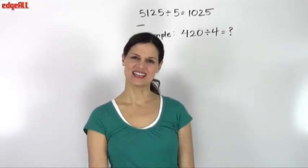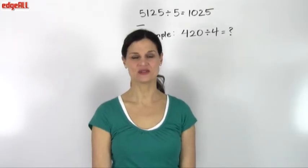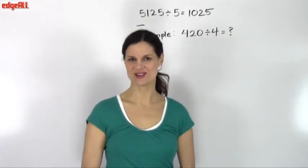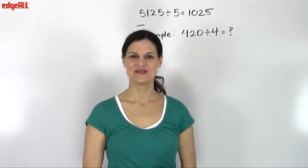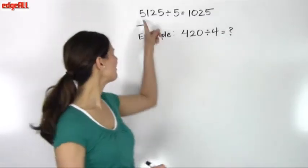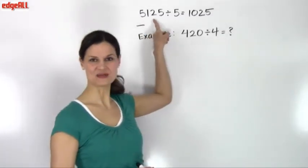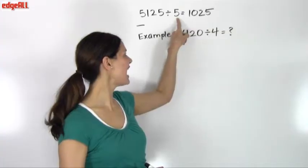When working with division, many students run into trouble when a zero appears in the quotient. For example, when solving a problem like 5125 divided by 5, we have a zero in our quotient.